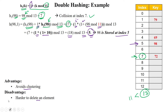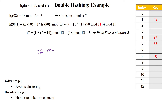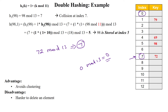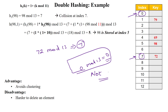For searching, suppose you want to find 72: simply compute 72 mod 13 = 7, then access index 7 to retrieve it. If you search for a value not present, such as 0 mod 13 = 0, you check index 0 and if it's not found, you report data not found. For deletion, the same approach applies — if the data is found, delete it; if not, report data not found. This is how double hashing is used to insert, search, and delete values from the hash table.